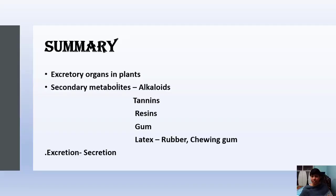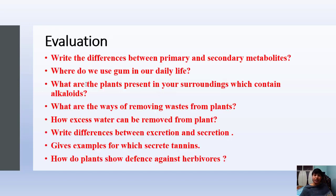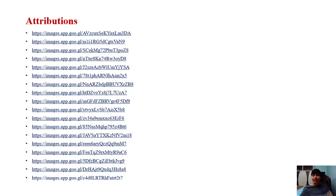Let us see the summary of what we have covered: excretory organs in plants like stomata and lenticels, and secondary metabolites like alkaloids, tannins, resins, gum, and latex, and the difference between excretion and secretion. Answer these questions: Write the differences between primary and secondary metabolites. Where do we use gum in our daily life? What plants in your surroundings contain alkaloids? What are the ways of removing waste from plants? How is excess water removed from plants? Write differences between excretion and secretion. Which plants secrete tannins? How do plants show defense against herbivores?